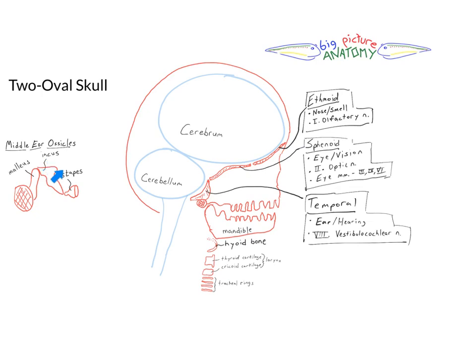Of course the throat skeleton with the hyoid, the larynx, and the trachea coming off of it, and then that complex base of the skull that for now we're going to understand is the ethmoid, sphenoid, and temporal bones associated with smell, vision, and hearing. That's the two oval skull, and that's the Big Picture Anatomy for today.